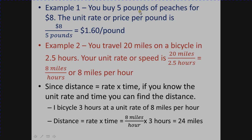Here's an example: I buy five pounds of peaches for eight dollars. When money is involved, the money usually goes on top. We want dollars per pound, so we take eight dollars divided by five pounds. Eight divided by five is 1.6, so the unit rate is $1.60 per pound.